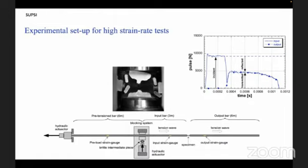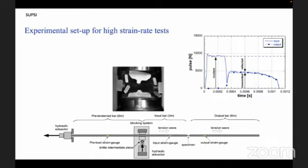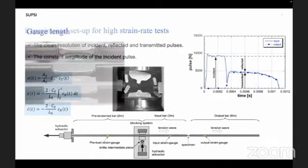The pulses were recorded by means of strain gauges in the two bars, and the graph shows the input and output signals as a function of time. We have used commercially available B500A steel rebar, round samples having 3 mm in diameter with 3 different gauge lengths: 5, 10 and 15 mm were used.